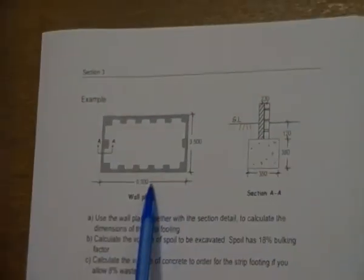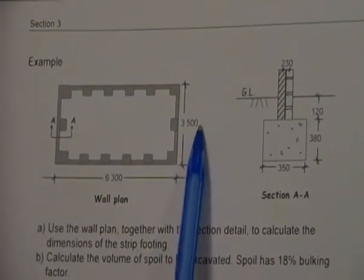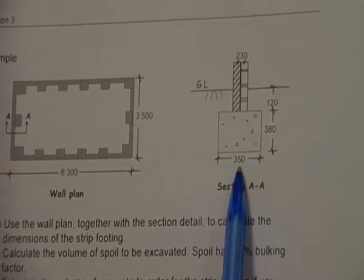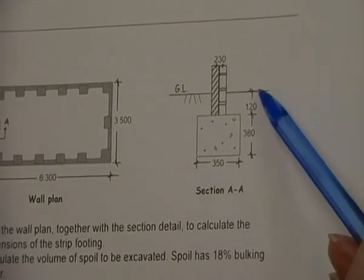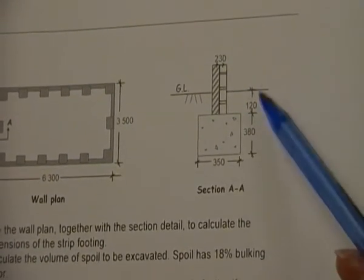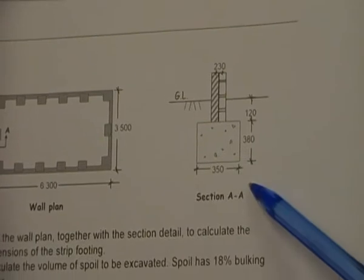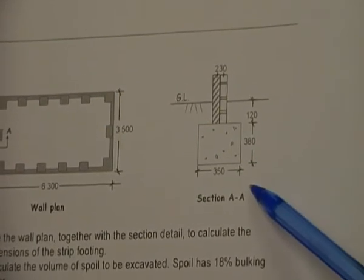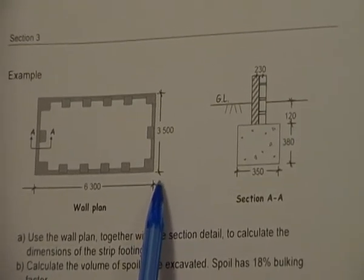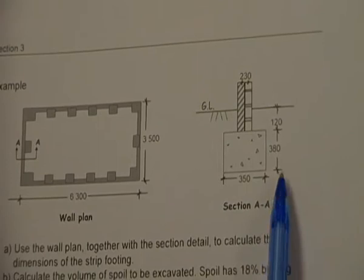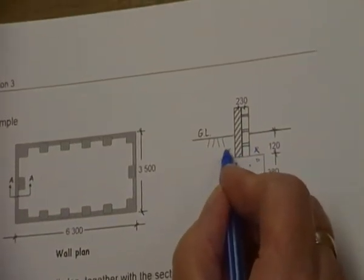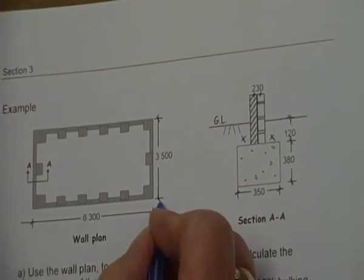We can go over to the next page and have a look at an example. This example says 6.3 by 3.5. Our footing is 350 wide. When we look here, we're going to be asked to calculate the spoil and the concrete. Spoil is always from ground level down, so we have to work out the new dimensions first. The first step is we have to work out the value of X, this little bit extra that's going to extend past it.